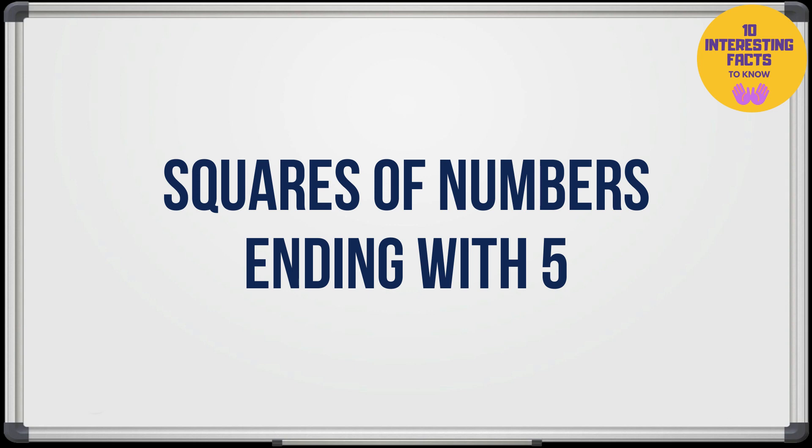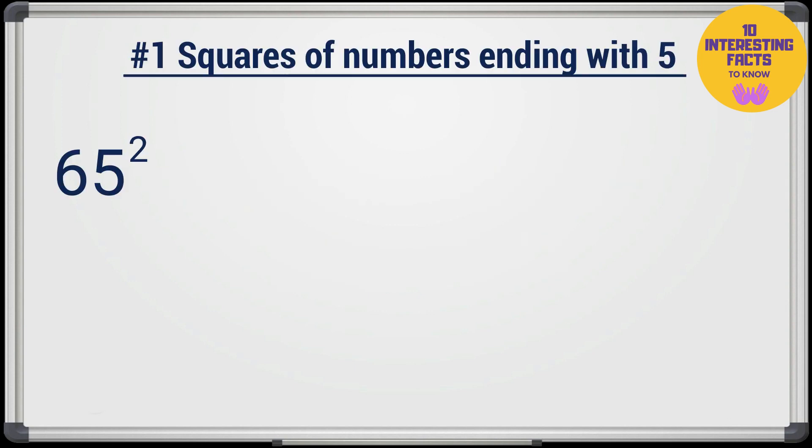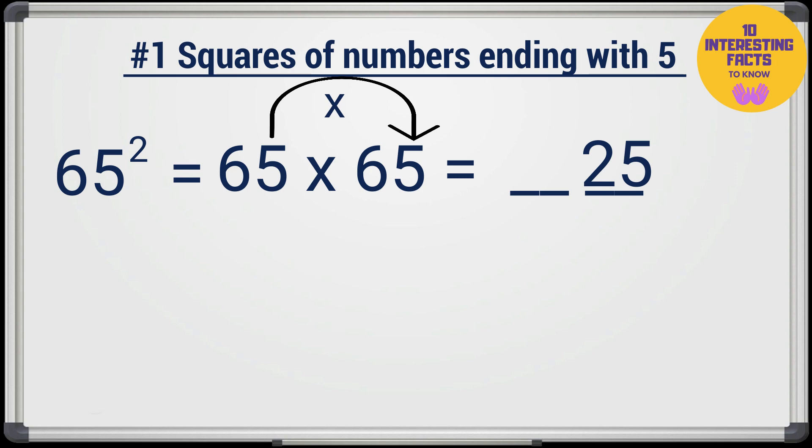Squares of numbers ending with 5. Let's take an example of 65. So we need to find 65 times 65. Let's split the answer in two parts. Last part will always be 25. We need to find out what comes before that.